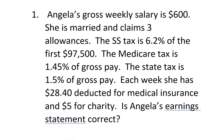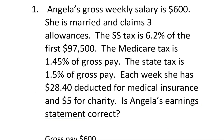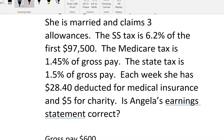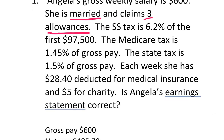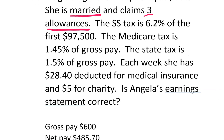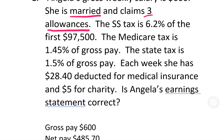Here is your first example. They look really long, but if you take it piece by piece, they're usually not so bad. Angela's gross weekly salary is $600. She's married and claims three allowances, so we need to take that into consideration. Social Security tax is 6.2% of the first $97,500. Medicare is 1.45%. State tax is 1.5%. Each week she has $28.40 deducted for medical insurance and $5 for charity. Is the earning statement correct?